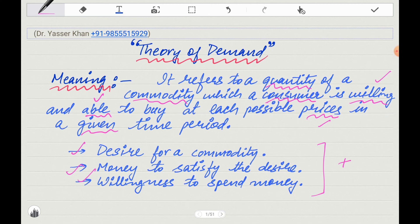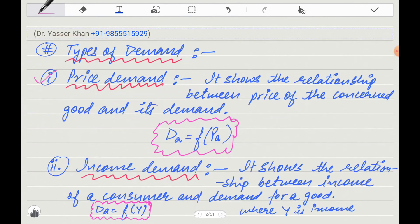Let's go to the next page and do types of demand. The first is Price Demand. Price Demand means when the demand is concerned with its price, it is called Price Demand. It shows the relationship between the price of the concerned good and its demand. Demand for A is a function of price of A, meaning demand for A depends upon the price of A.